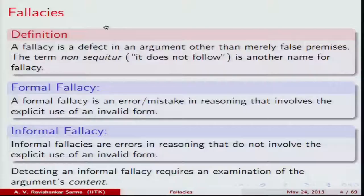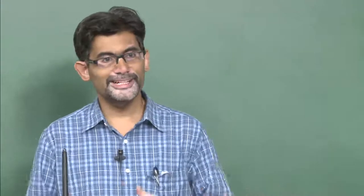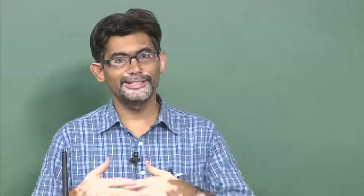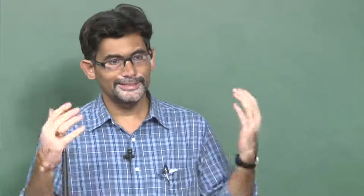A fallacy is a defect in an argumentation other than merely false premises. Just because an argument has a false premise does not mean it is a fallacy — there are many arguments with false premises that are still valid. For example: 'All squares are circles; all circles are parallelograms; therefore all squares are parallelograms.' The premises are obviously false, but there is no mistake in the form of that argumentation. Yet since we do not want these kinds of arguments in day-to-day discourse, we invoke the concept of soundness.